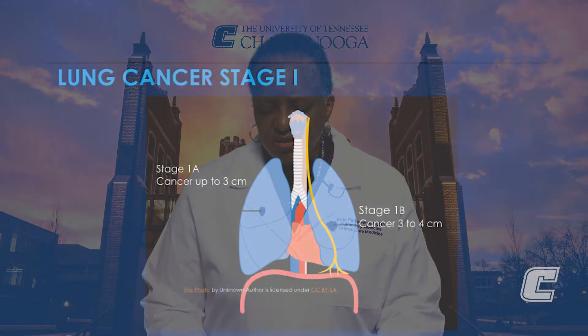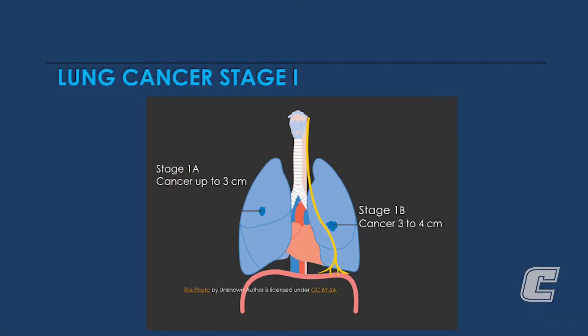This shows an example of stage 1a cancer, with tumors that are up to 3 centimeters in size in the right lung. The left lung shows an example of stage 1b, with cancers that are 3 to 4 centimeters in size.